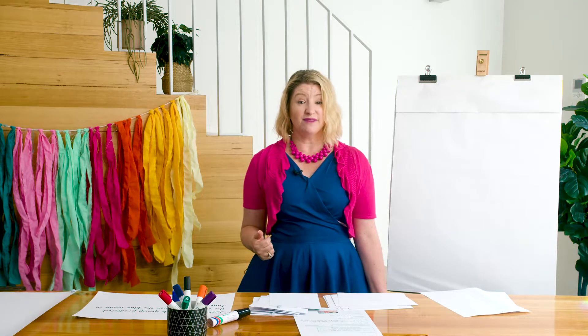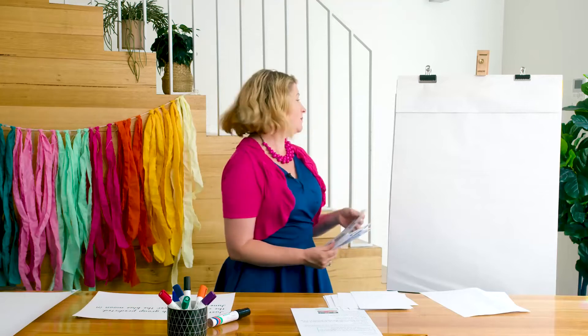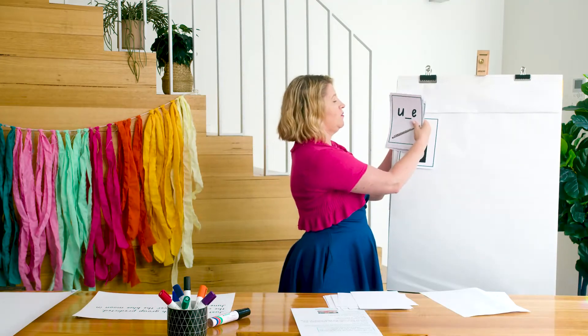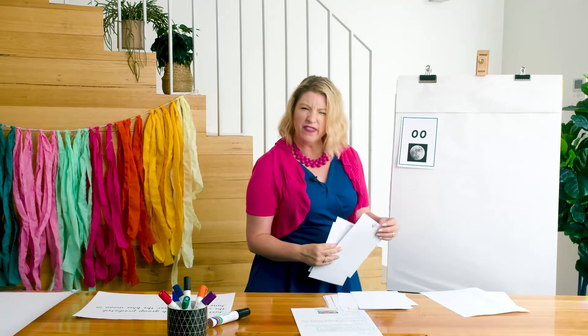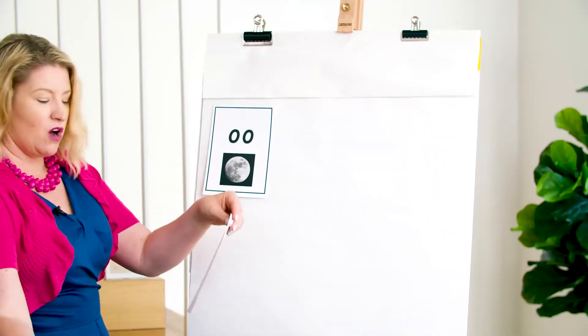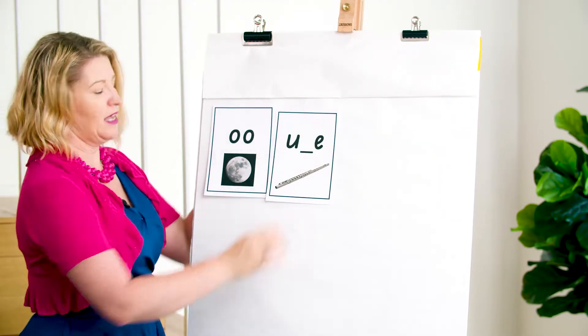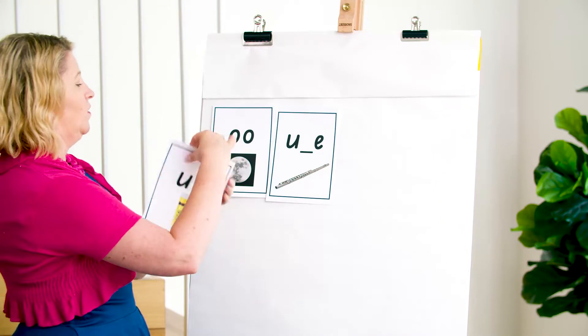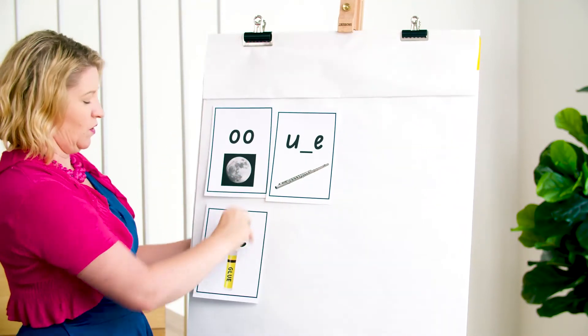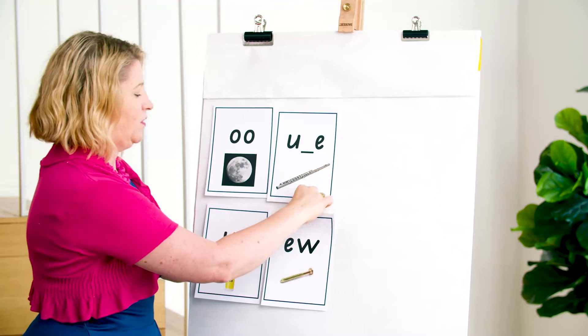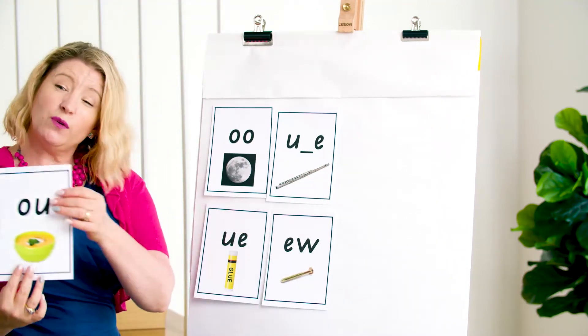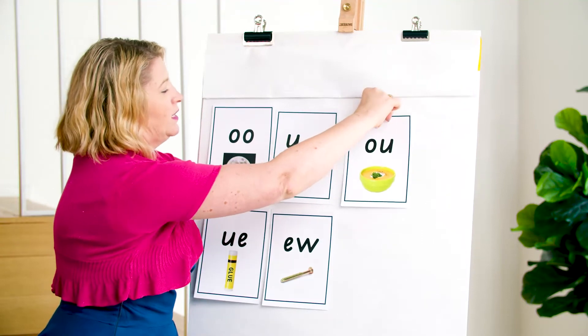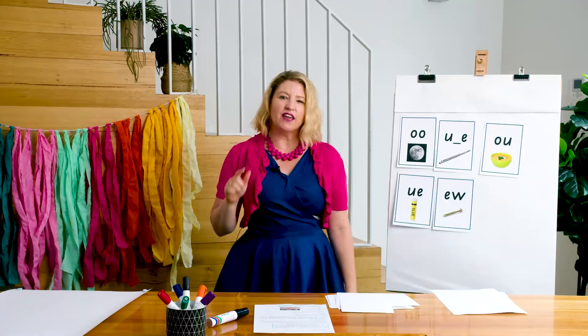Are you ready for the sentence? Just as the youth group predicted, the comet flew over the blue moon in June. I'm going to put up our alternative sounds so I can show you which grapheme you might want to use for spelling. We've got double O for OO like in moon, UE split vowel making OO like in flute, UE like in glue, EW as in screw, and the new one we've been doing — OU as in soup. Lots of grapheme choices. Are you ready for the sentence?